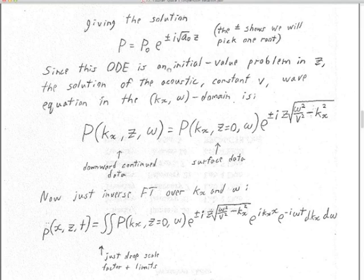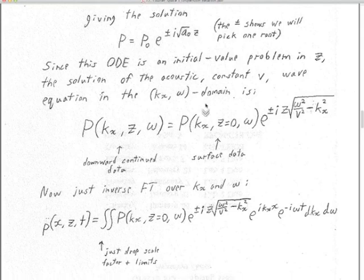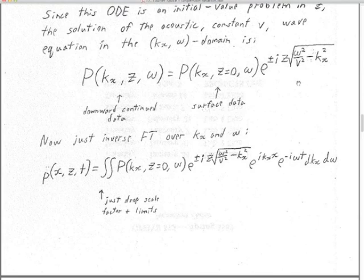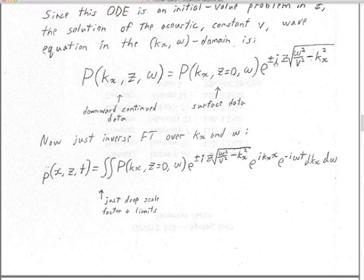This is an initial value problem in z. Writing out the whole solution with all the variables we just developed for our wave field: our initial data are the wave field at z=0. We've Fourier transformed it from x and time, so our 2D zero-offset data set is in x and t. We Fourier transform it in two dimensions to kₓ and ω — that's our initial data. We multiply it by e^(±i·z·√(ω²/v² − kₓ²)), where z is the depth we want. We get a 2D wave field at whatever constant depth z we put in — that's our downward continued data.